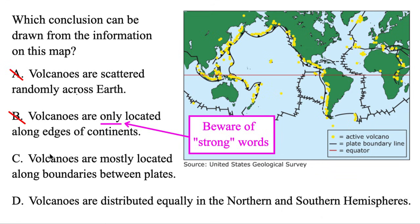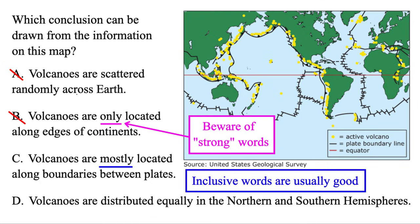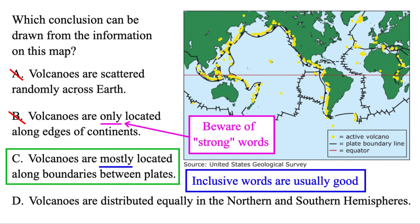The third option: volcanoes are mostly located along boundaries between plates. That word 'mostly' is much better because it's much more inclusive, and that is true. Volcanoes are mostly located along the boundaries between plates — along those black lines — but occasionally you get some out in the middle of the ocean. That's okay, because they're still mostly there, so C is true.